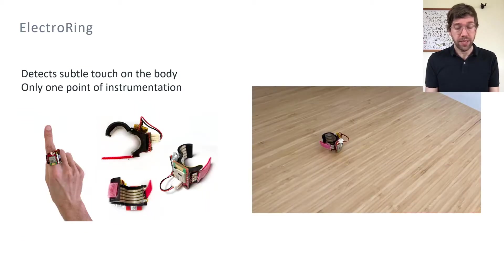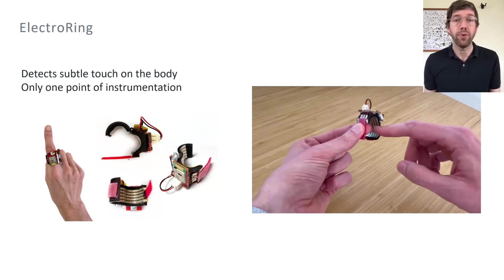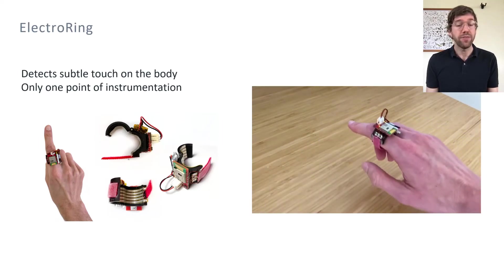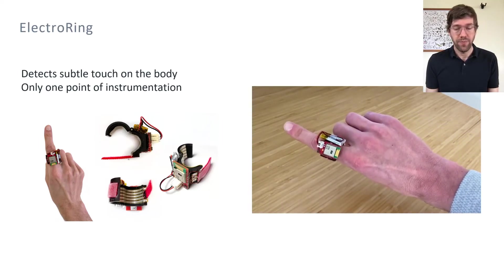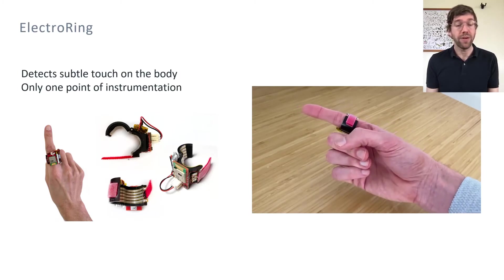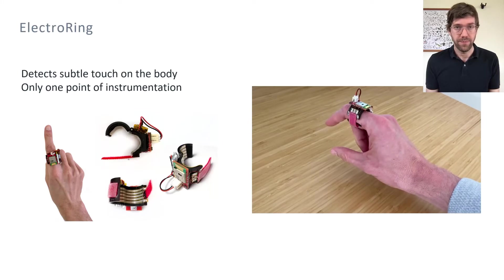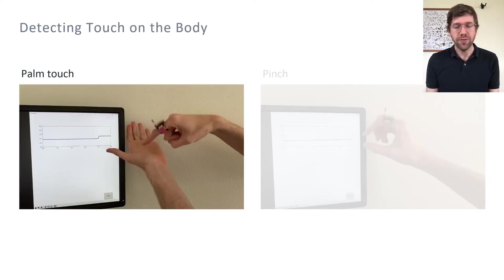We address this limitation with ElectroRing, our new finger-worn device that enables subtle touch detection on the user's body without a second point of instrumentation. ElectroRing uses the same active electrical approach as ActiTouch but places the transmitter and receiver right next to each other, eliminating the need to wear a second device. ElectroRing effectively turns the user's fingertip into a highly sensitive instrument that can detect touch with any part of the user's body.